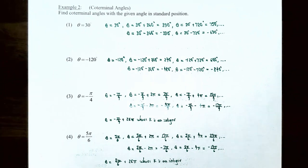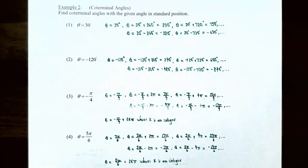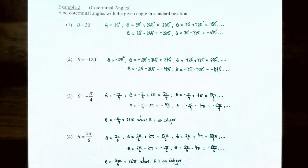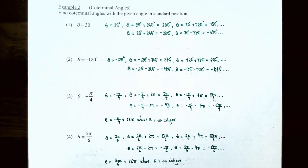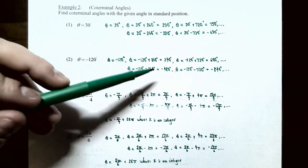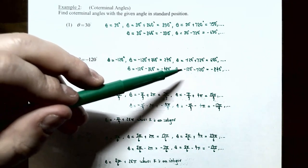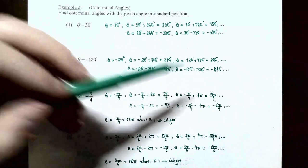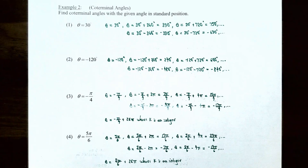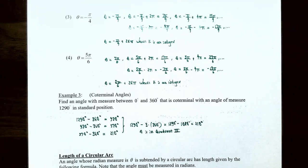For negative 120 degrees, subtracting one clockwise revolution gives negative 120 minus 360 equals negative 480 degrees, which is coterminal. Subtracting two clockwise revolutions gives negative 120 minus 720 equals negative 840 degrees, also coterminal with negative 120 degrees.